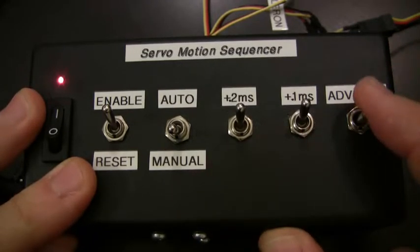Of course it's still in manual mode so it'll step through the aileron, elevator, rudder in sequence according to the advance switch.